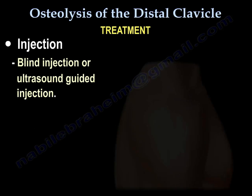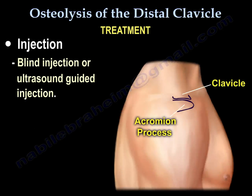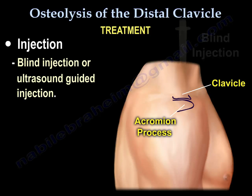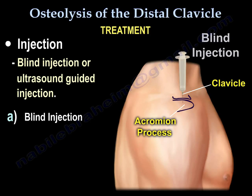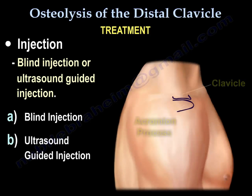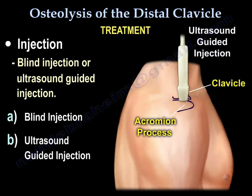Injection can be a blind injection or ultrasound-guided injection. For the blind injection technique, you go between the clavicle and the acromion. Ultrasound-guided injection is probably much easier and ensures you are absolutely sure you are in the joint, as the joint is small and may be difficult to inject blindly.